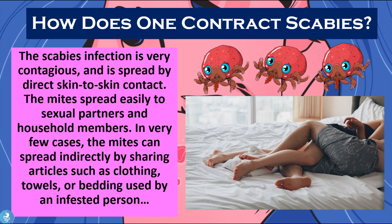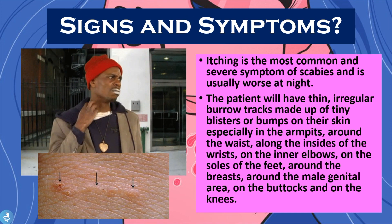So how does one contract scabies? The scabies infection is very contagious and is spread by direct skin-to-skin contact. The mites spread easily to sexual partners and household members. In very few cases, the mites can also be spread indirectly by sharing articles of clothing, towels, or bedding used by an infested person.